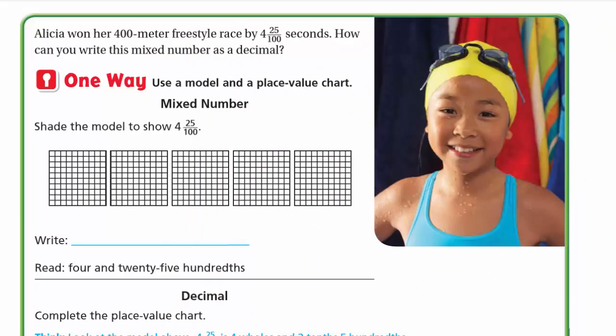Initial 1: the 400-meter freestyle race was won by 4 and 25 hundredths seconds. How can you write this mixed number as a decimal? We need to write 4 and 25/100 as a decimal. We'll use the first way: model and place value chart.